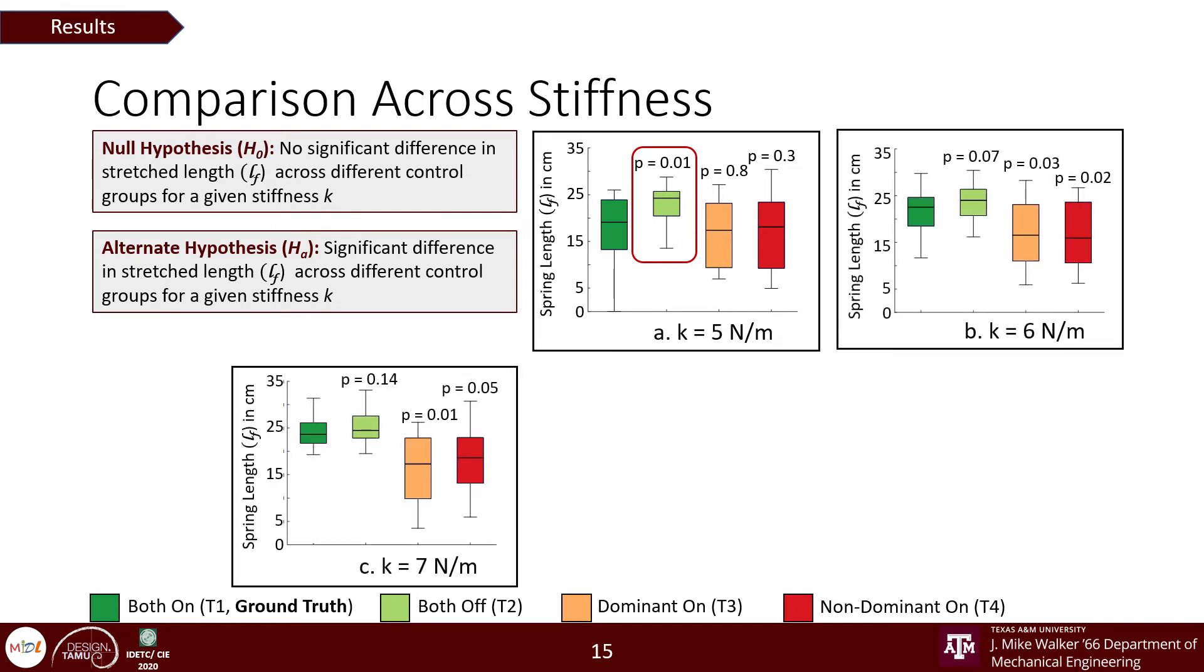For stiffness values 6 and 7, conditions where force was applied to only one hand were found to have asymmetry identified at a shorter spring length with respect to the ground truth of about 5 to 6 centimeters less on an average.